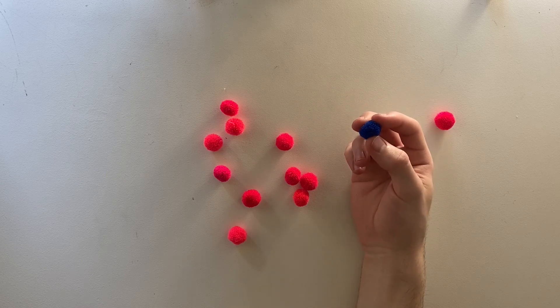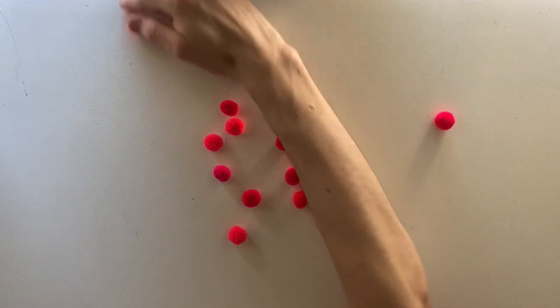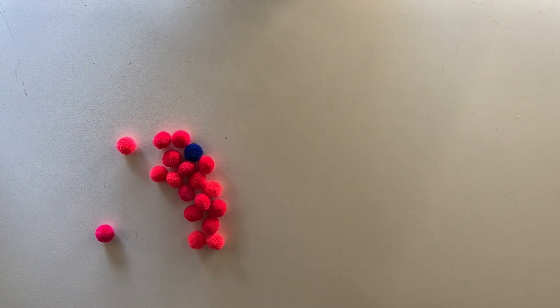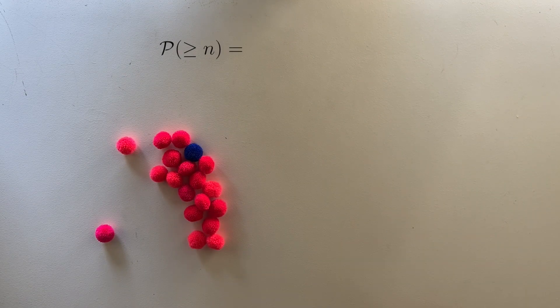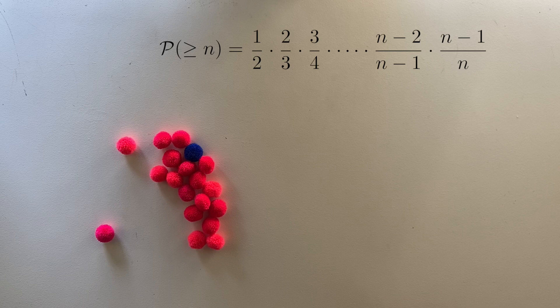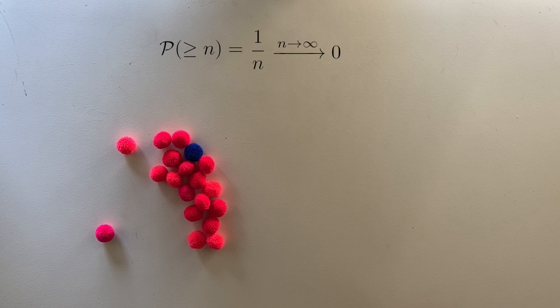Every time you play this game, you will eventually draw the blue ball. What's the probability that you haven't drawn the blue ball before round N? It's one half, times two and three, times three and four, times four and five, and so on up to N minus one over N. But we already saw that we can cancel all the middle terms, and this comes out to one over N. And as N increases, this probability gets arbitrarily close to zero. So in the limit, the probability that you never draw the blue ball is zero.